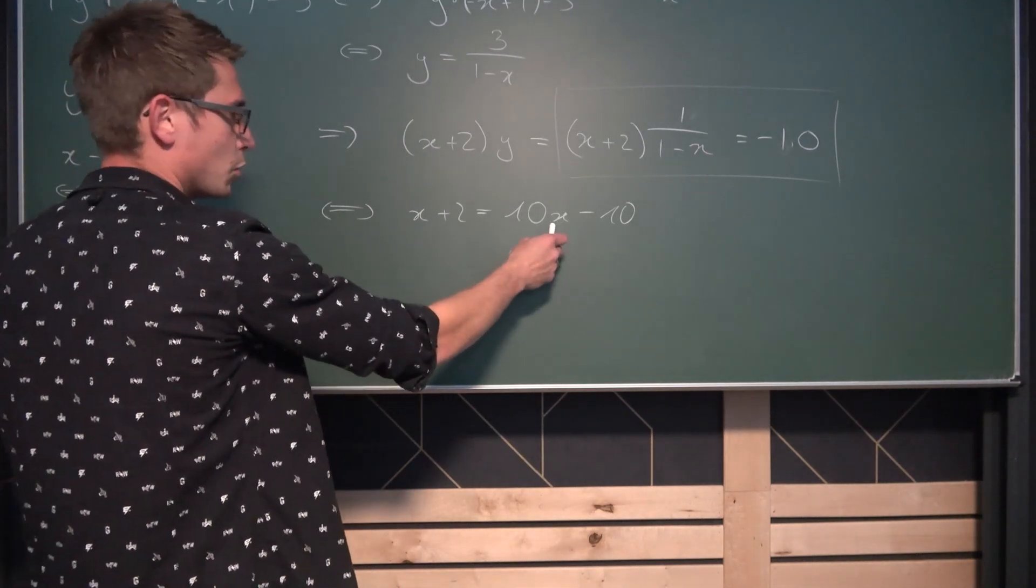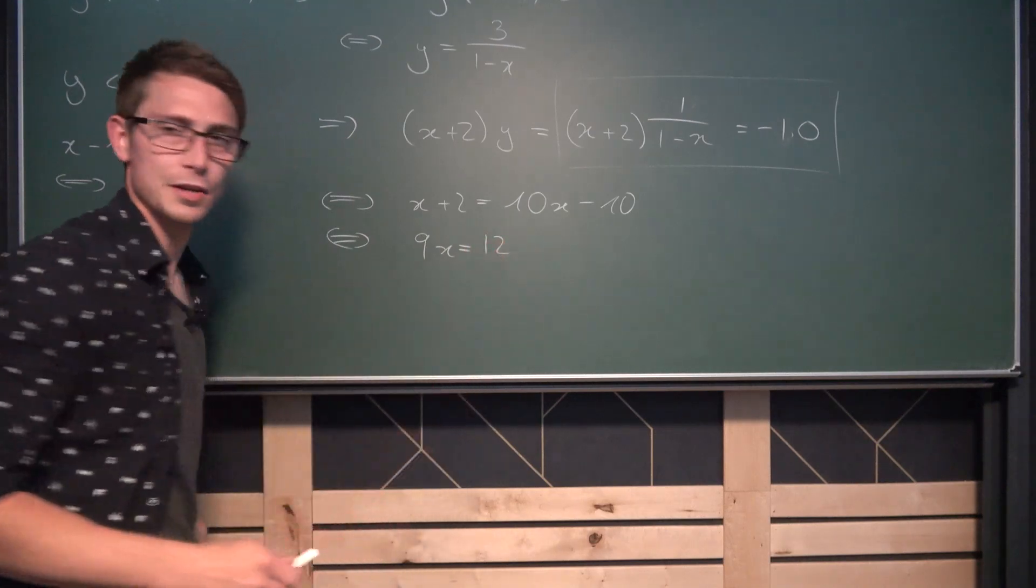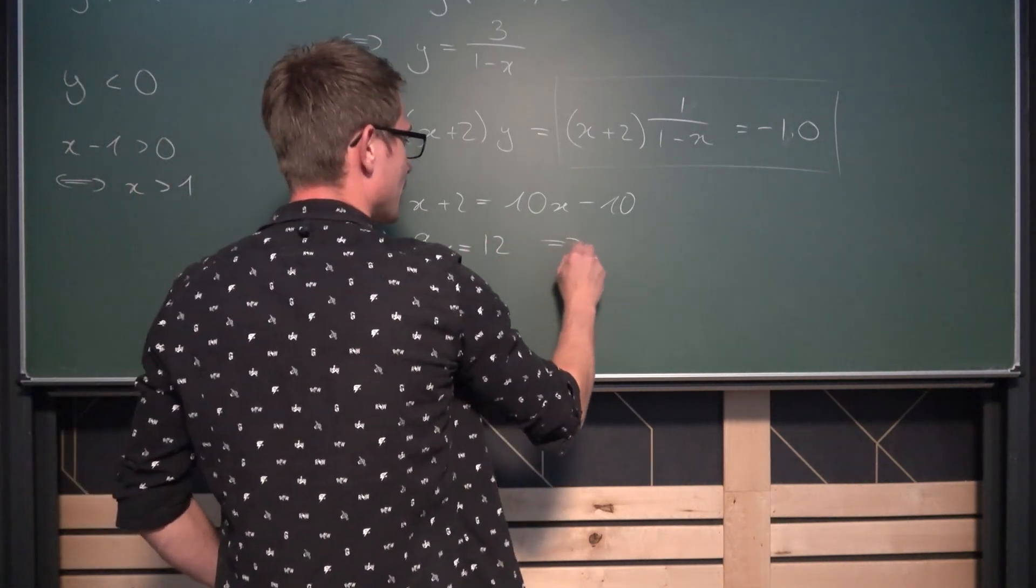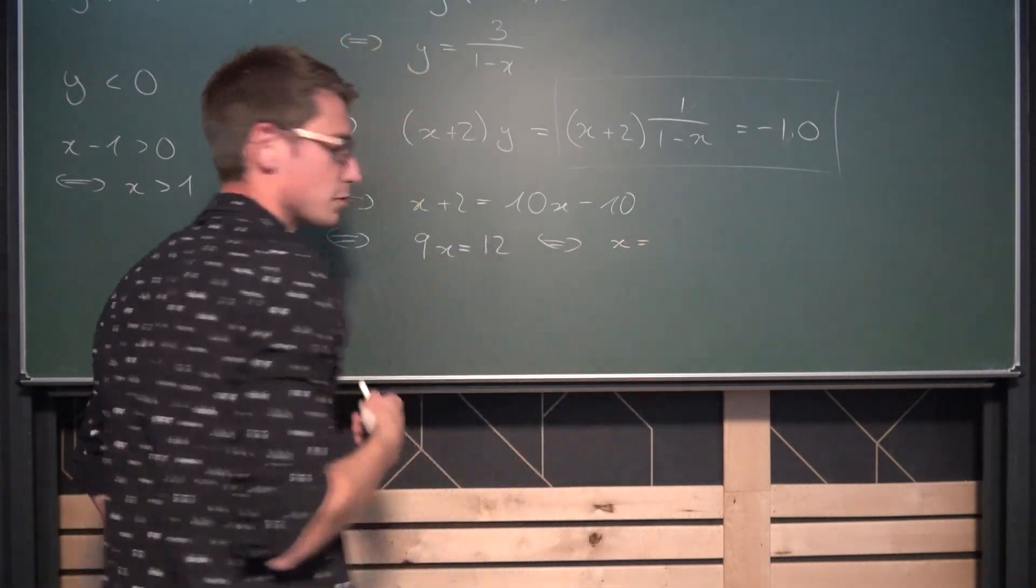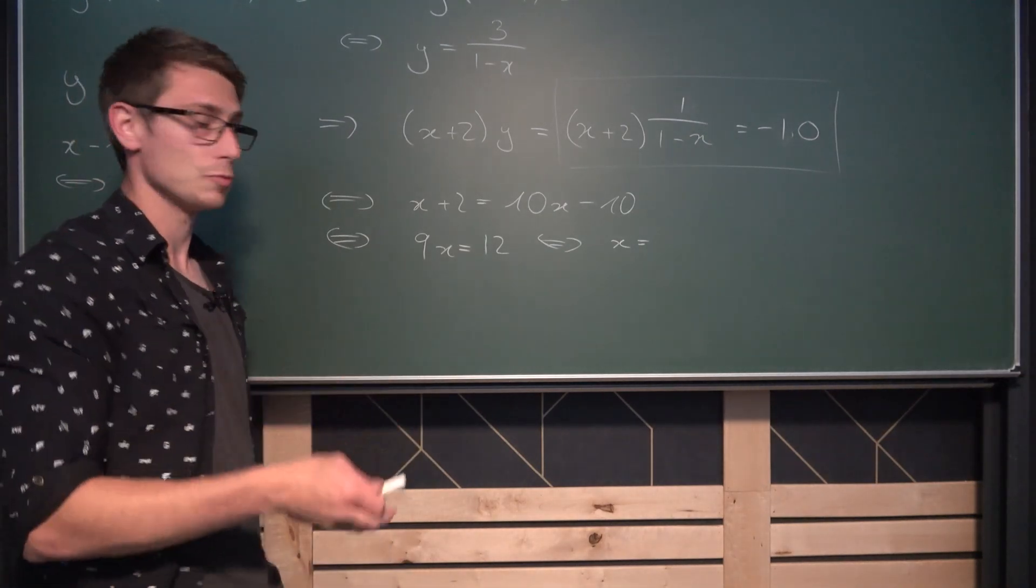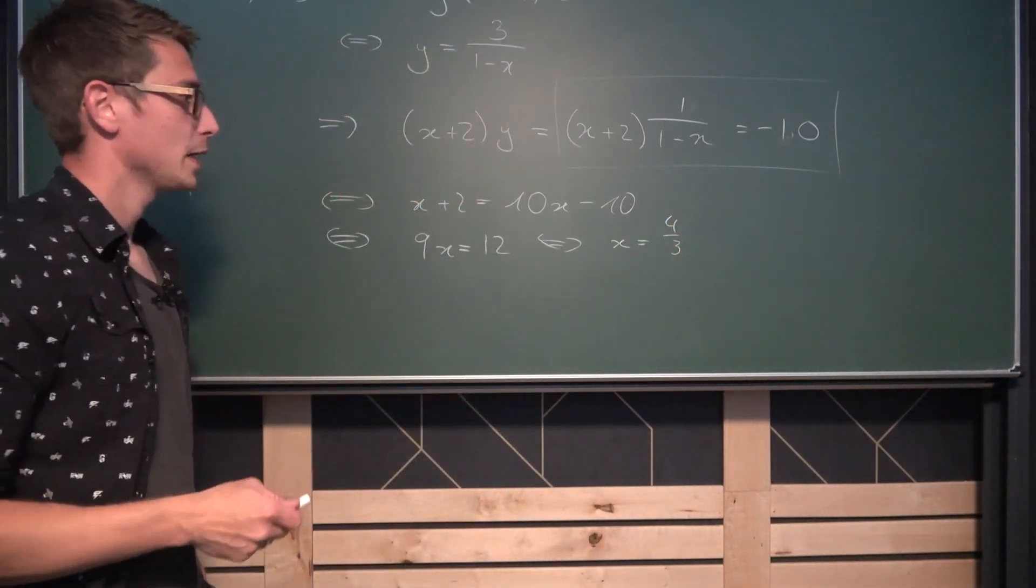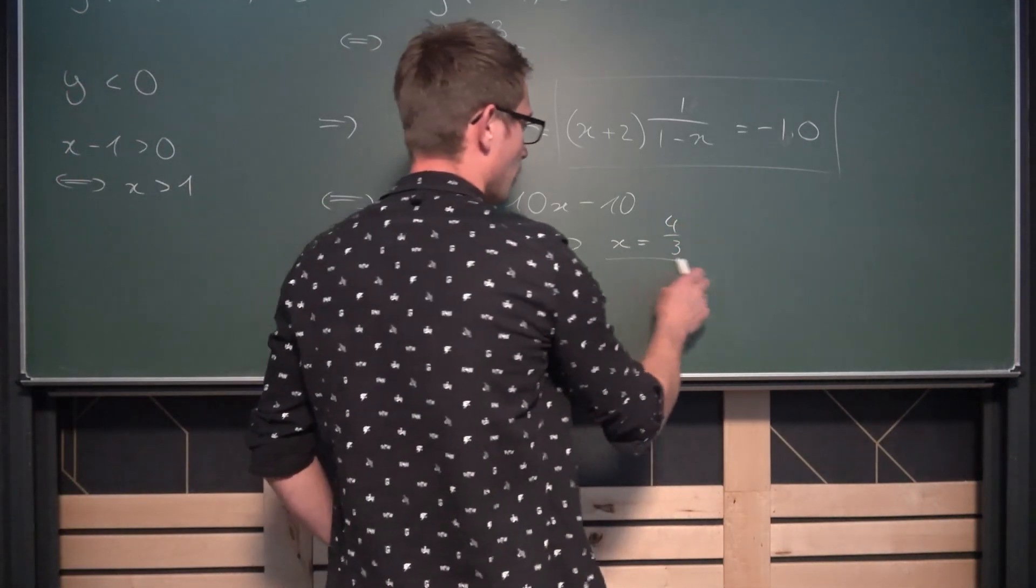And now we can just solve this. We can subtract x on both sides and add 10. We are going to end up with 9x being equal to 12 and dividing both sides by 9 is going to give us that x is equal to 12 divided by 9. Or by cancelling out 3s on the numerator and denominator, we are going to get 4 over 3. And this right here is the value for x.